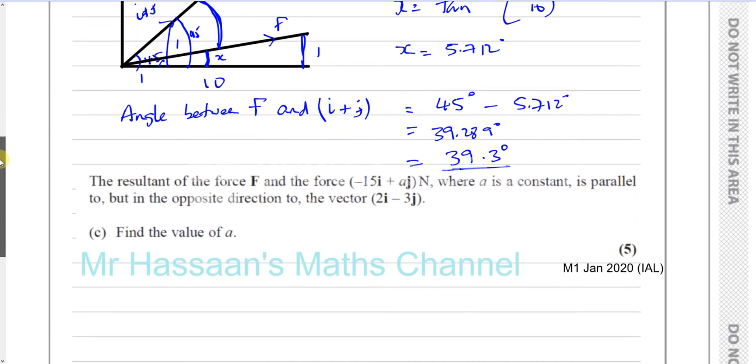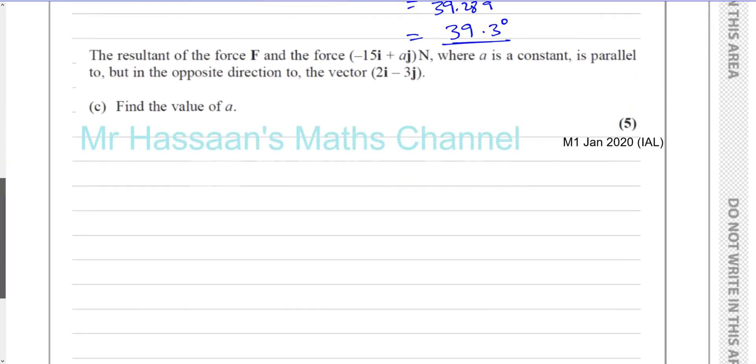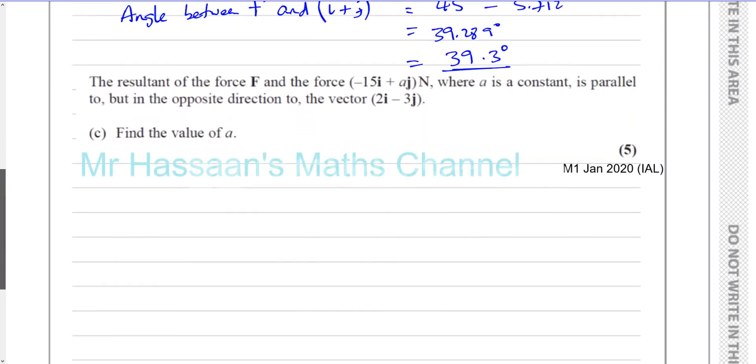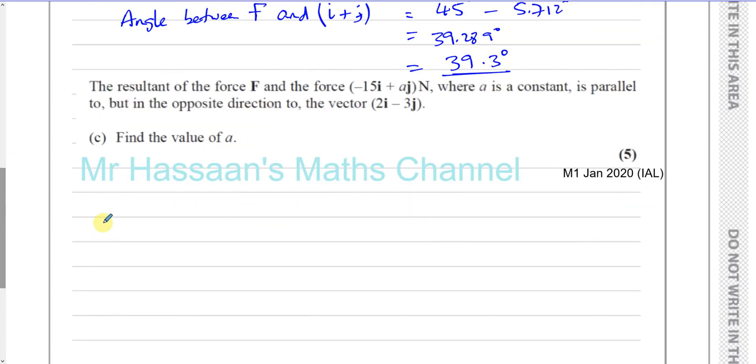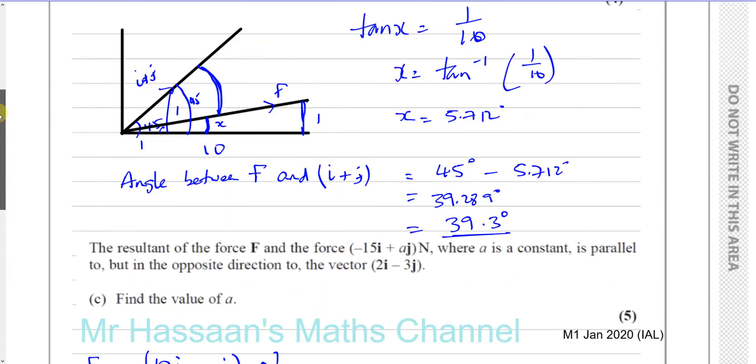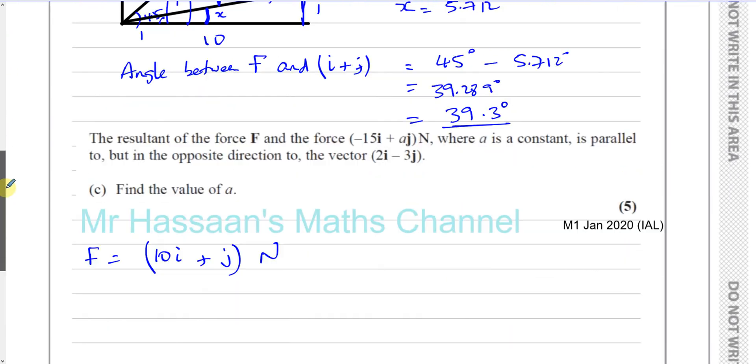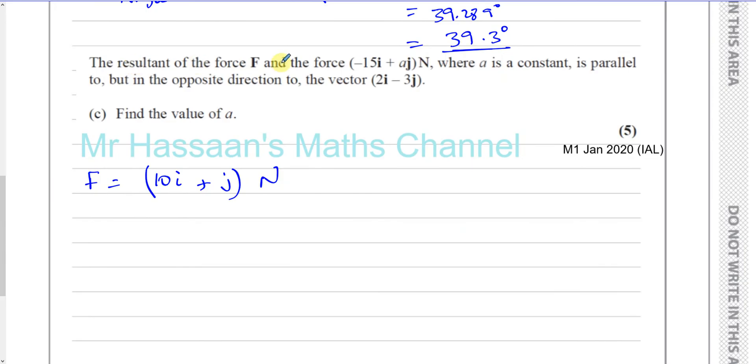Then, it says the resultant of the force F and the force minus 15i plus Aj newtons, where A is a constant, is parallel to, but in opposite direction to, the vector 2i minus 3j. So, remember, the force F was 10i plus j newtons.